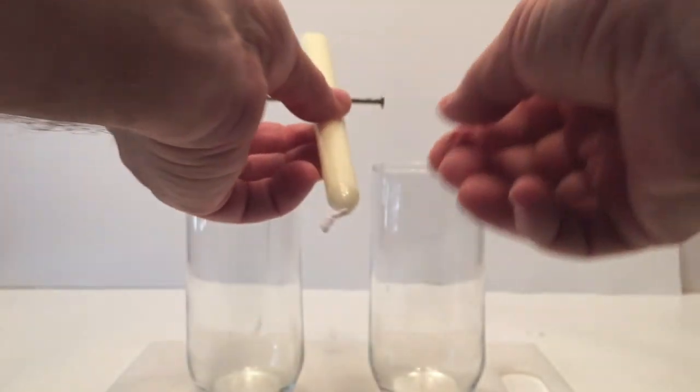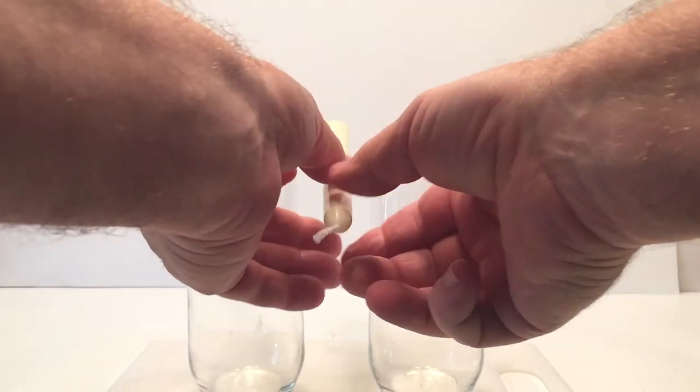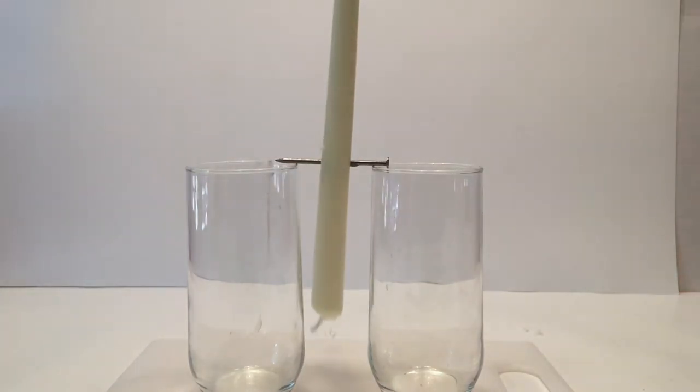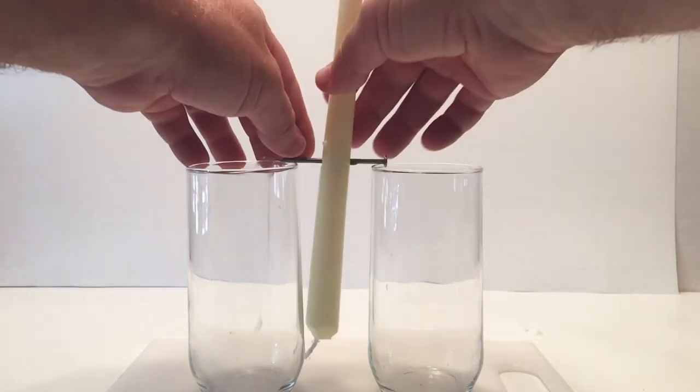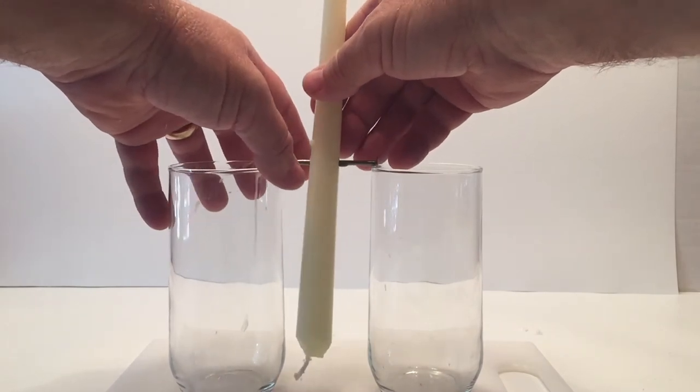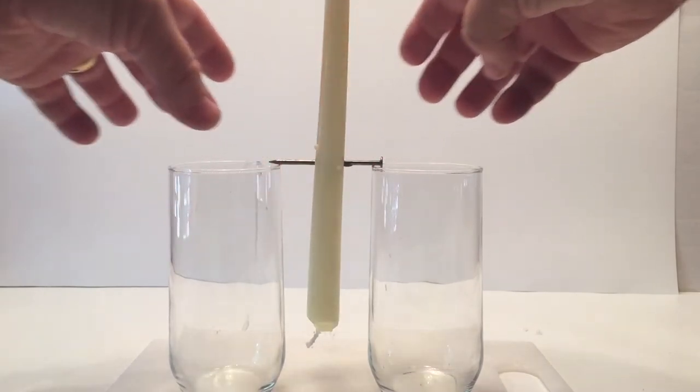Then you're going to take that nail about halfway through and you're going to balance it on two glasses so the candle can be on its own but not hit the glass itself. So you want to adjust that. Now you have wicks on both ends of the candle and then we're going to light it from there.